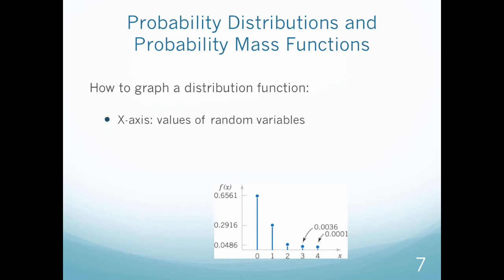Let's look at how we would graph a distribution function. I have x values, which are my values of my random variable. So I have 0, 1, 2, 3, and 4 in this case. And then my y-axis is going to be the probabilities that correspond to those values.